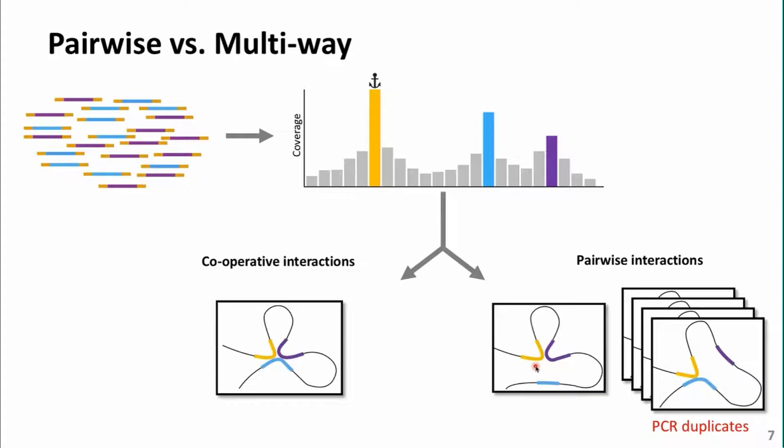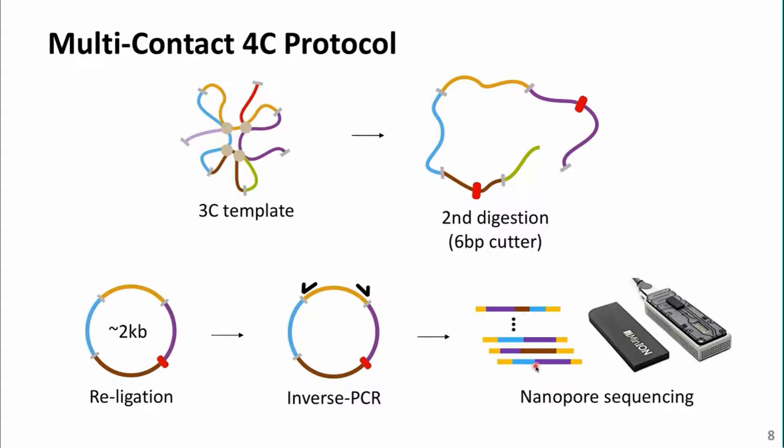In order to resolve these problems, we devised multi-contact 4C. MC4C uses 3C templates but instead of a second digestion to make shorter concatemers, it uses six-base-pair cutters that cut less often, resulting in longer concatemers. Once sequenced, these can provide multi-way interaction information. For sequencing, we need to use nanopore sequencing instead of Illumina, because these reads are often larger than what Illumina can sequence.